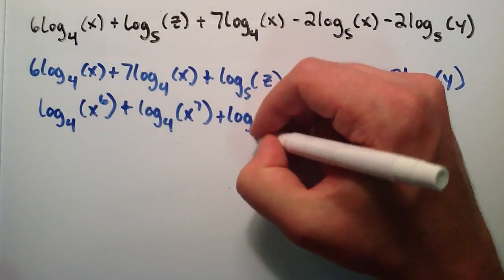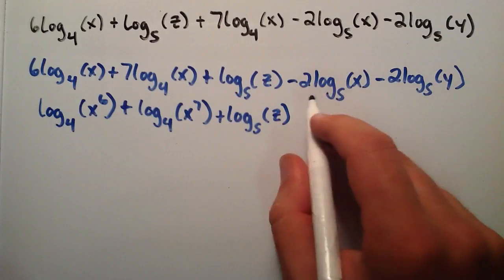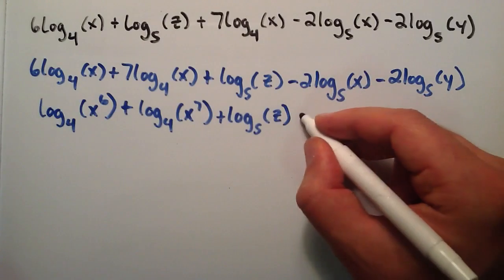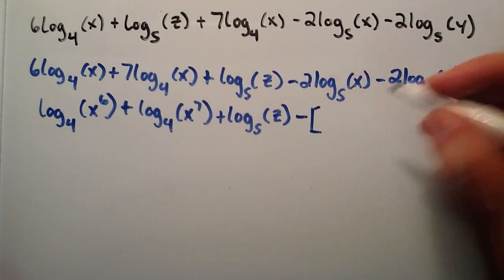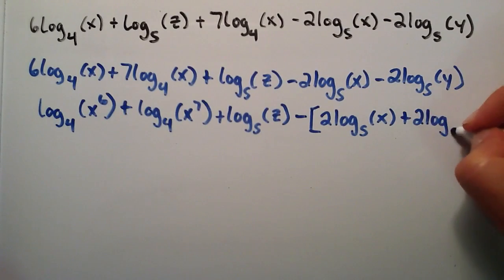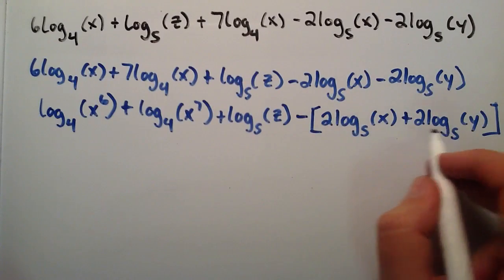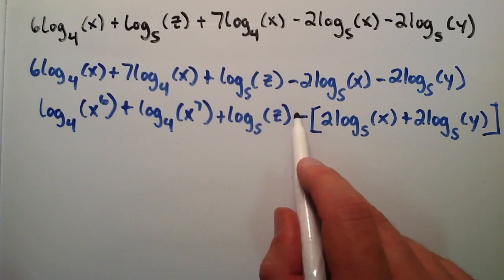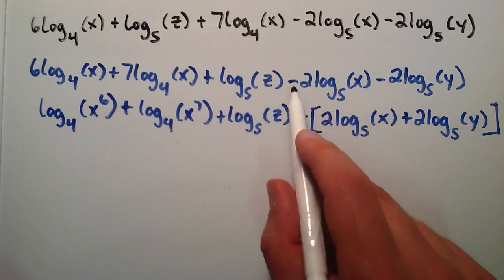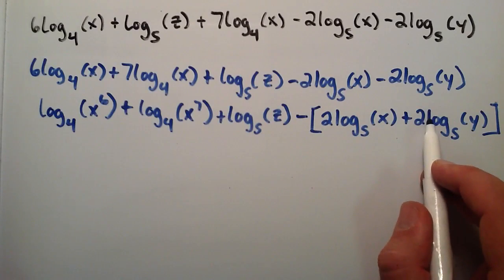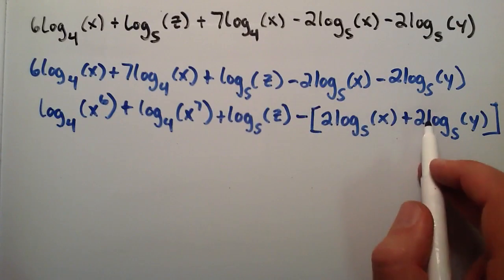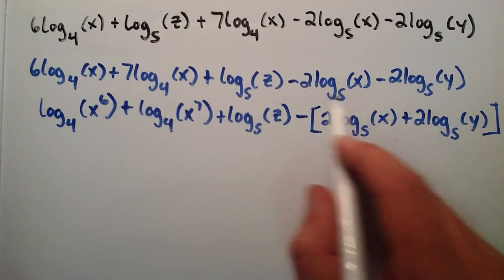We have plus log base 5 of z, and then minus all this stuff. Before distributing the coefficients into the exponents, I'd like to rewrite this a little bit as: minus 2 log base 5 of x plus 2 log base 5 of y. This is exactly the same thing as what is above, because if we use the distributive property, distributing the negative gives us negative 2 log base 5 of x and negative 2 log base 5 of y — which is what we had. So these two sections are identical.